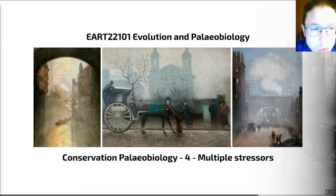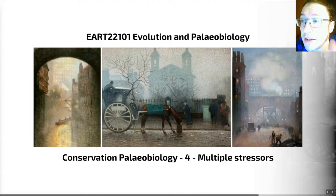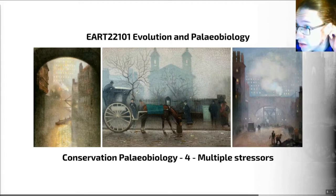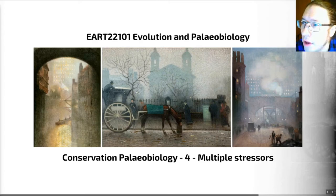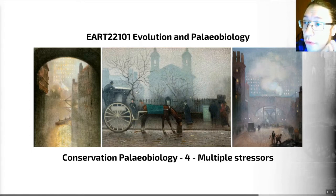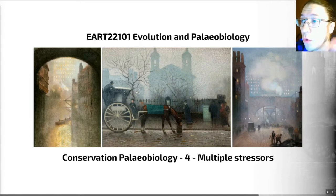That last video was a series of insights into the impact that single stressors can have on our ecosystems. But in the modern day and age where we've got anthropogenic impacts, rarely do environmental stressors come by alone. They're like buses — you wait for a bus and then three come along. Often there'll be a common cause, such as humans, that will cause multiple stressors to impact on an ecosystem all around the same time.